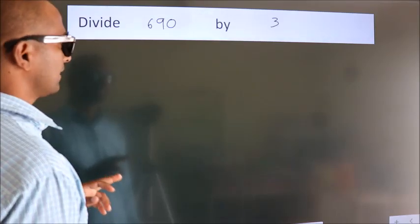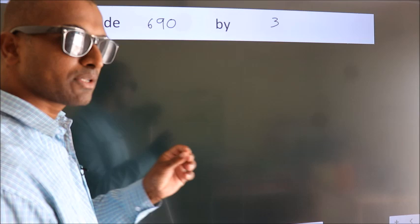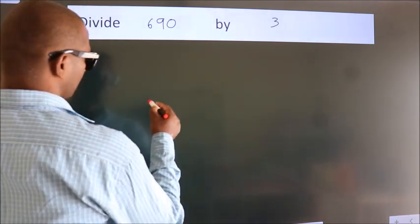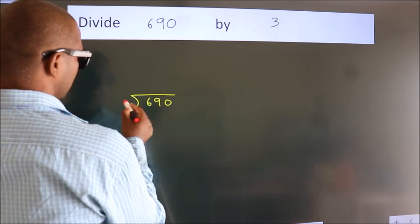Divide 690 by 3. To do this division, we should frame it in this way. 690 here, 3 here.